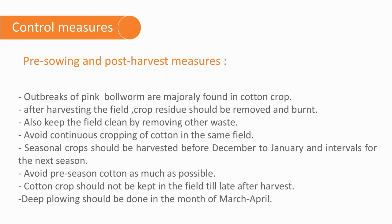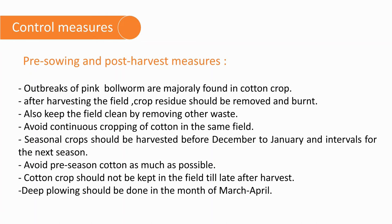Control measures — pre-sowing and post-harvest: Outbreaks of pink bollworm are majorly found in cotton crops. After harvesting, crop residues should be removed and burnt. Keep the field clean by removing other waste. Avoid continuous cropping of cotton in the same field. Seasonal crops should not be harvested before December to January intervals for the next season. Avoid pre-season cotton as much as possible. Cotton crop should not be kept in the field till late after harvest. Deep plowing should be done in the month of March–April.